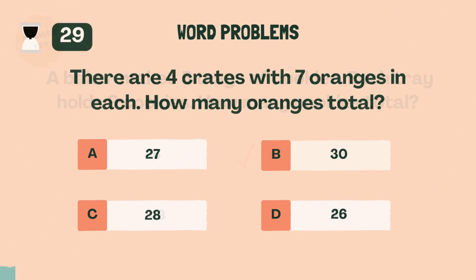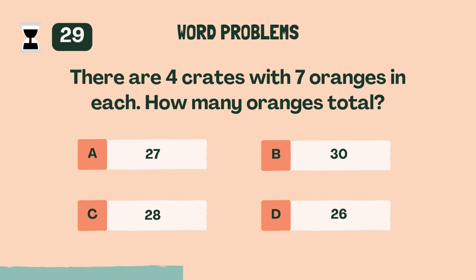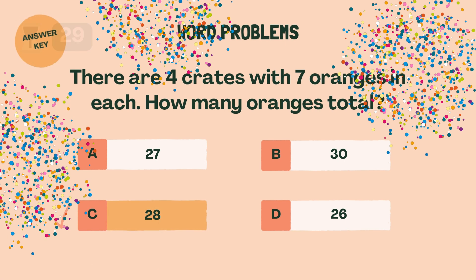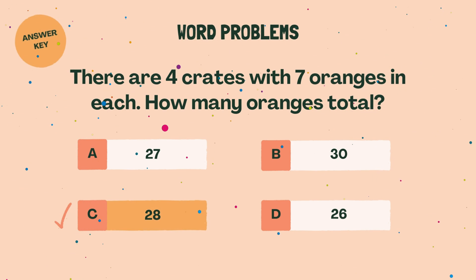There are 4 crates with 7 oranges in each. How many oranges total? C. 28.